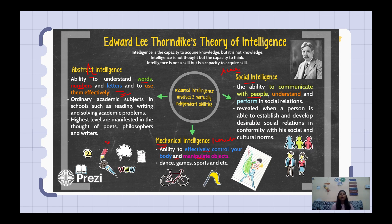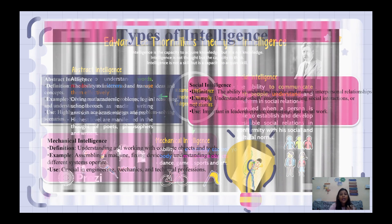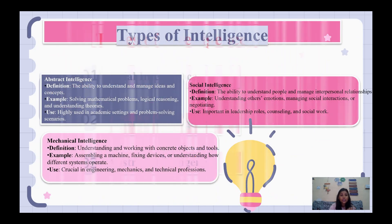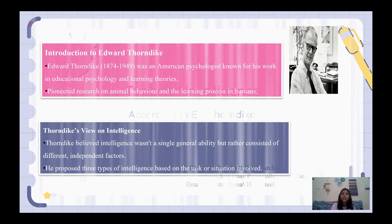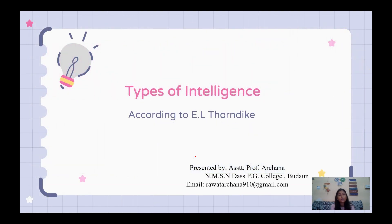I hope you have understood. In this class, we have discussed the types of intelligence according to E.L. Thorndike, covering abstract intelligence, social intelligence, and mechanical intelligence. We also discussed who E.L. Thorndike is — an American psychologist and the father of educational psychology — and the fields he worked in. Thank you so much.